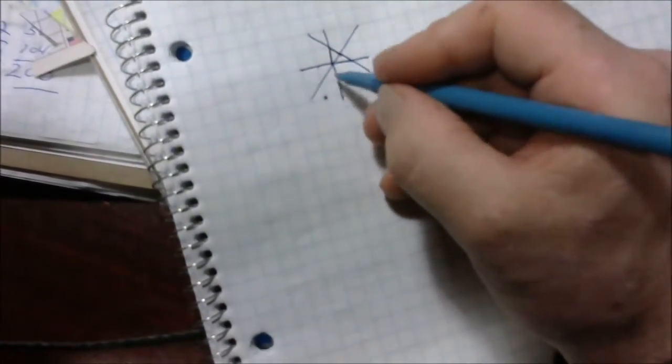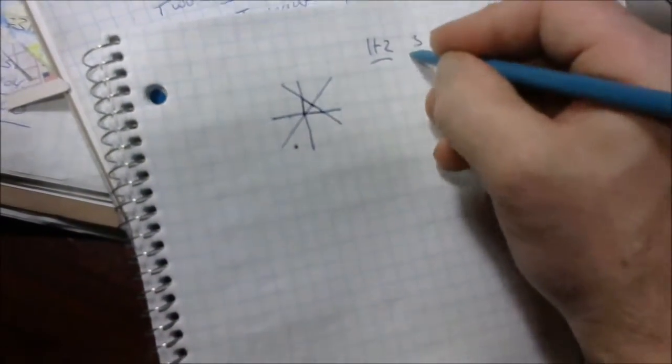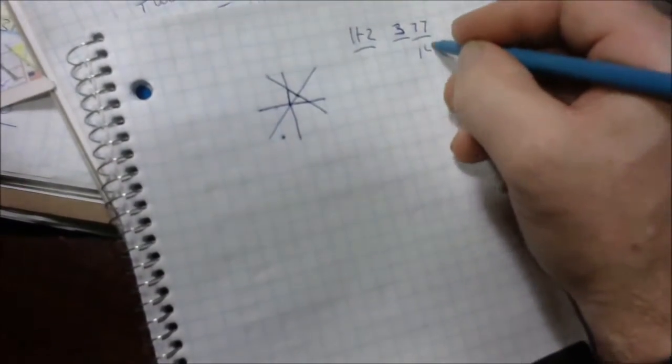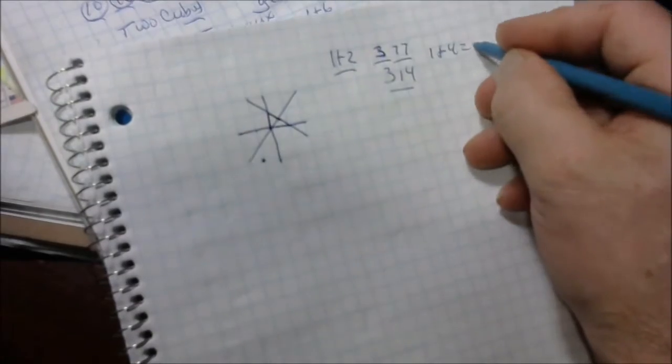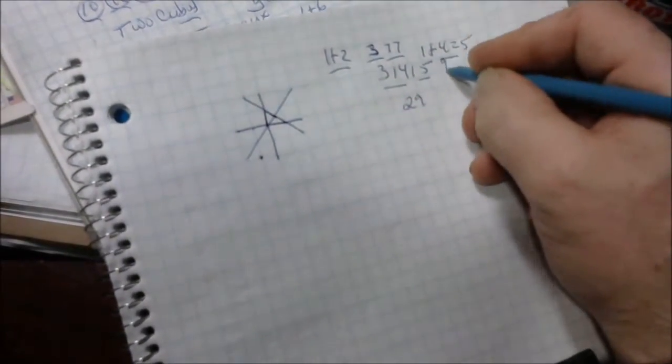When one splits a corner of two, when one splits two, you get seven and seven. One and two equals three and you get seven and seven. Seven and seven is 14. Three, one, four. One plus four equals five. Three point one, four, one, five. The total is 29, nine, two.